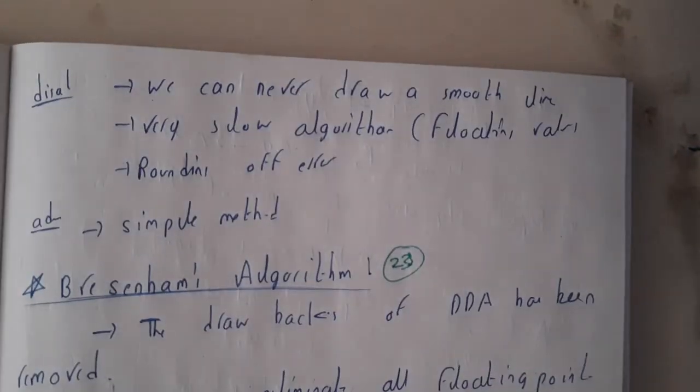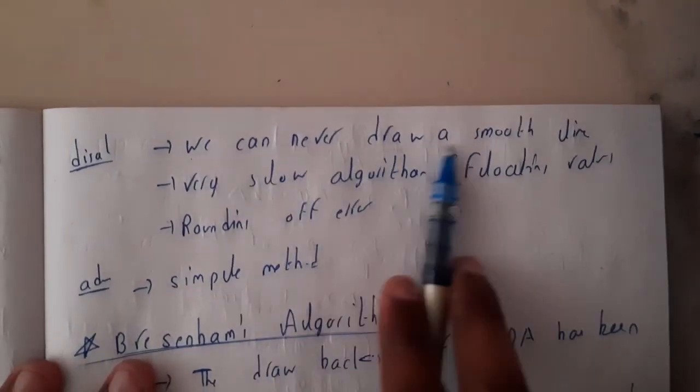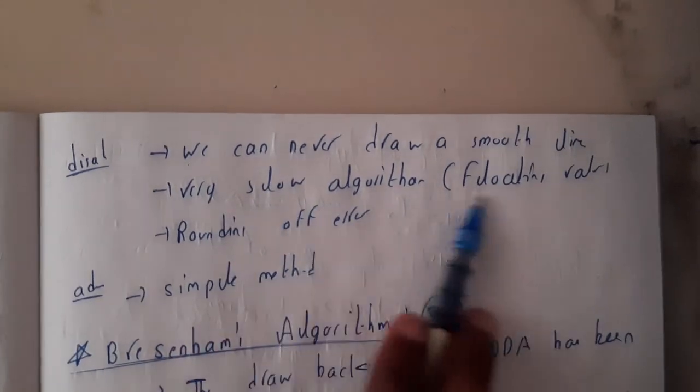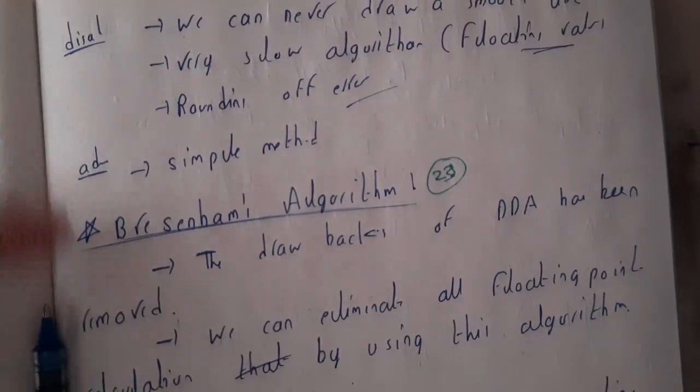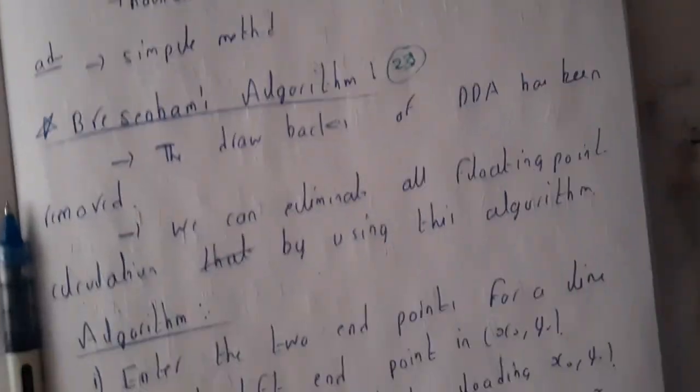This drawing algorithm is not giving you the smooth result so that could be a disadvantage. We can never draw a smooth line, very slow algorithm, floating point values are avoided and the roundoff is an error.